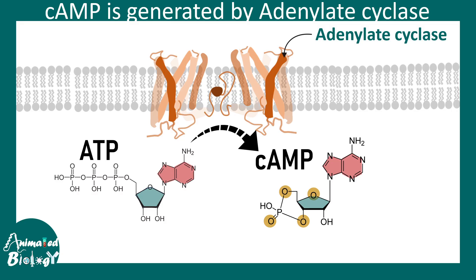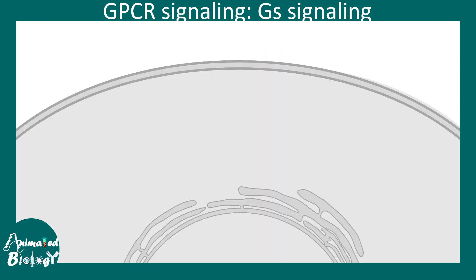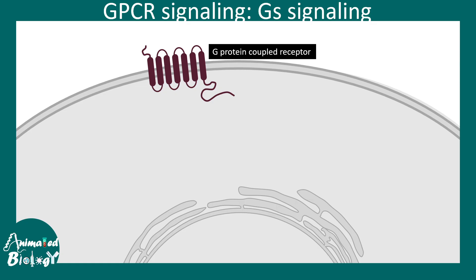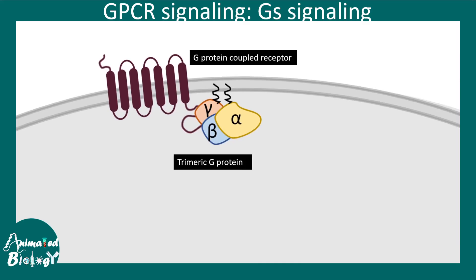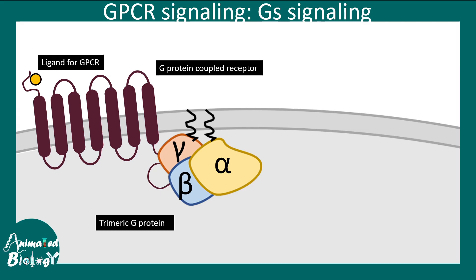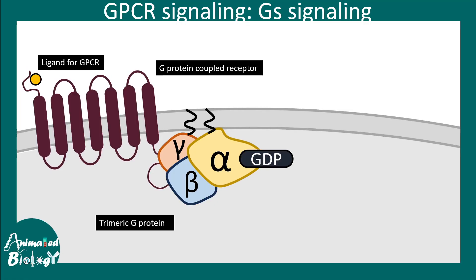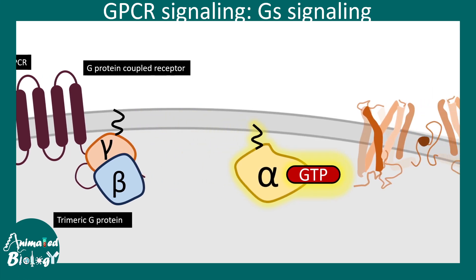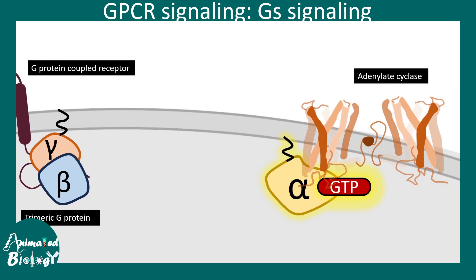Let us understand how, by looking at a classical GS signaling scheme. There are G protein coupled receptors present on the cell surface — many hormone receptors are G protein coupled receptors, for example FSH or LH receptors. When the ligand is bound, the trimeric G protein associated with the receptor gets activated, replacing GDP with GTP. The alpha subunit then dissociates to activate the enzyme adenylate cyclase.